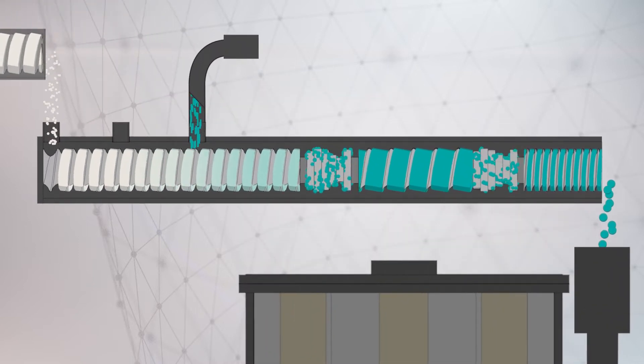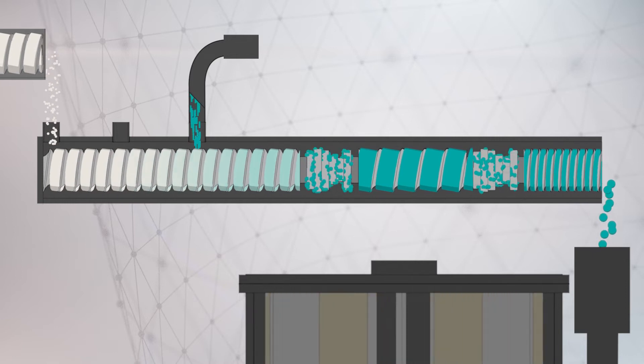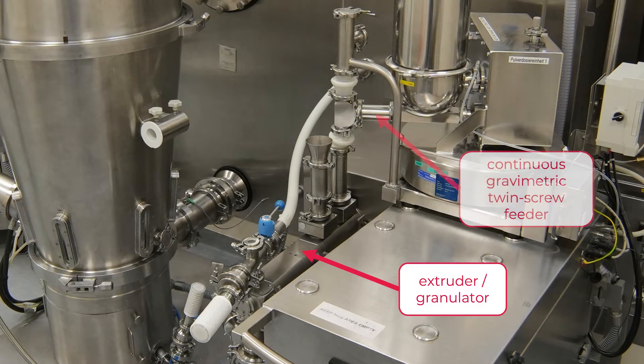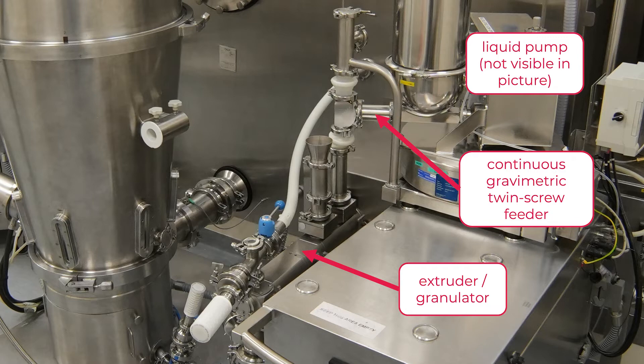The extruder mixes powder with a liquid, the binder, to produce granules which are then dried. The setup we use here consists of the extruder, a gravimetric feeder and a pump for the liquid.